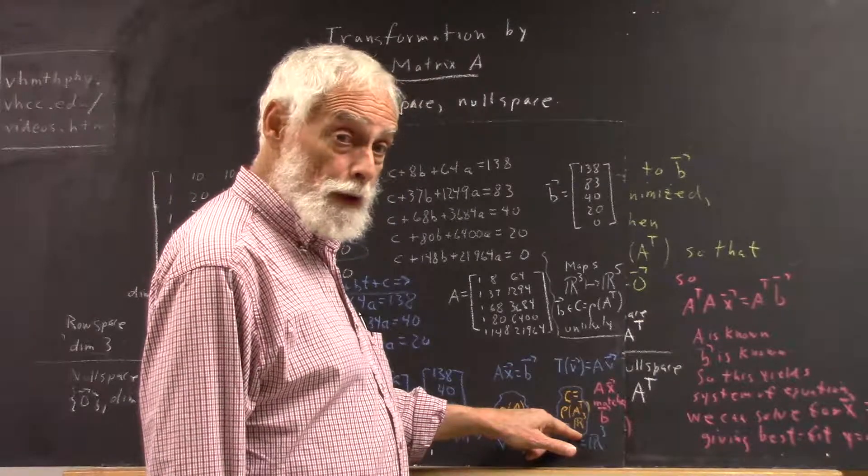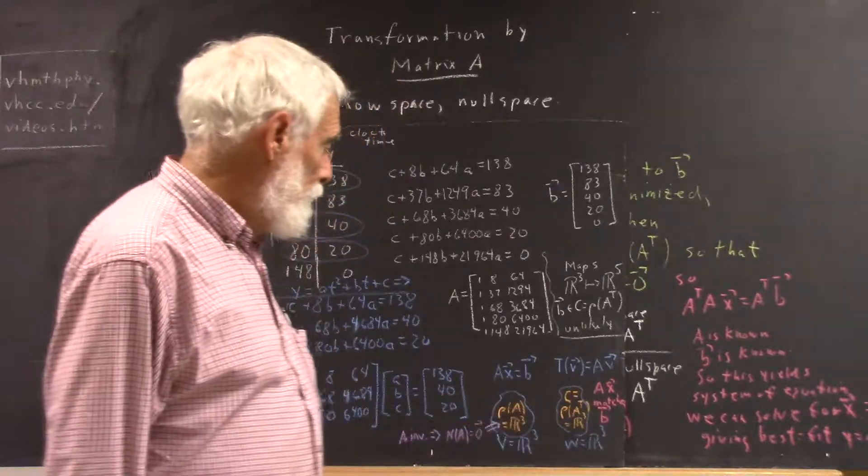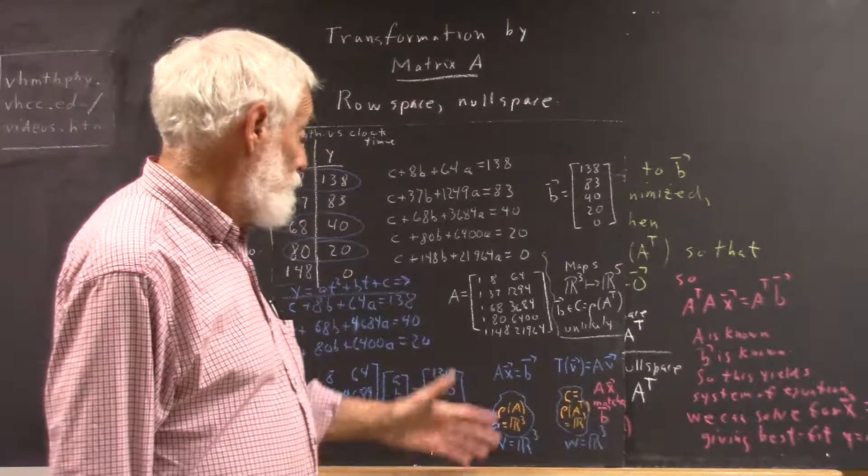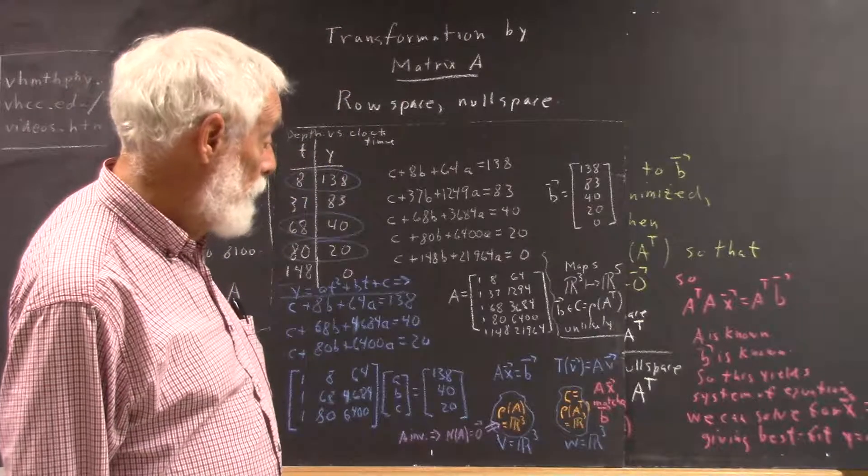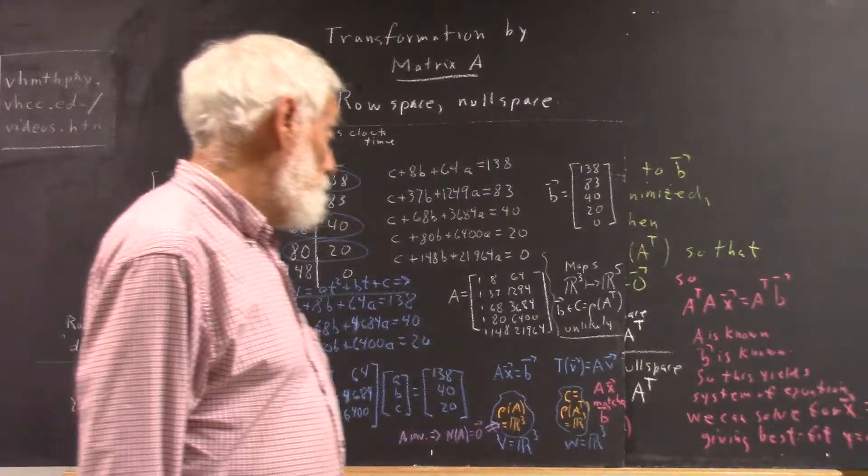And that's going to be all of r3, because the column space of a has the same dimension as the row space, for reasons that we've understood for some time, I hope.